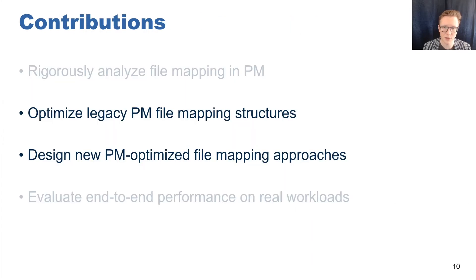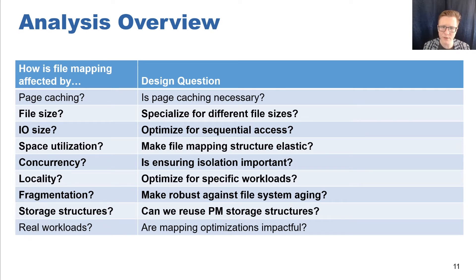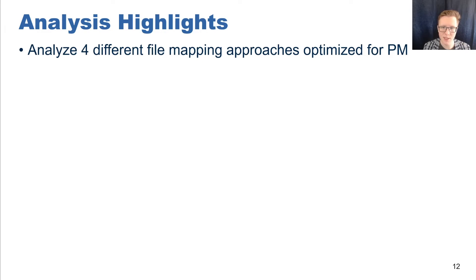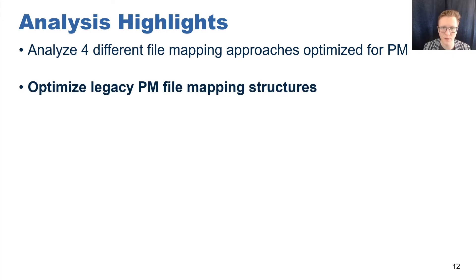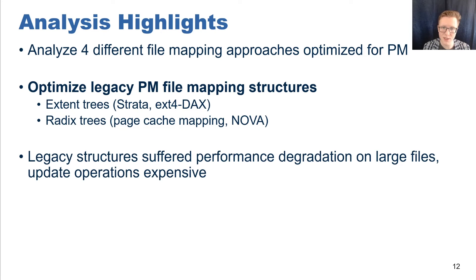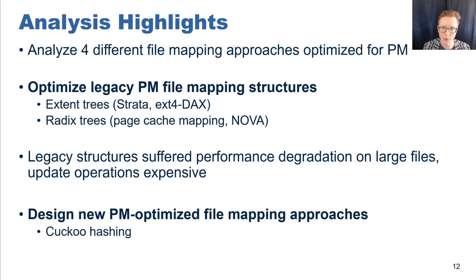Now that we know we can consider file mapping approaches which don't rely on page caching, let's discuss how we optimize file mapping for persistent memory. We designed four file mapping approaches optimized for persistent memory, representing a range of design points to empirically determine what factors are most important for good performance. We first optimized two legacy mapping structures: extent trees used in Strata and EXT4 DAX, and radix trees used as mapping structures for page caches and volatile mappings in NOVA. We optimized these by removing their dependence on the page cache and implementing multi-level cursors for large sequential I/O. However, these structures suffered performance degradation for large files and poor update performance. Based on this analysis, we also designed two new file mapping approaches: a hash table approach based on cuckoo hashing, and an enhanced version called HashFS which also includes block allocator optimizations.